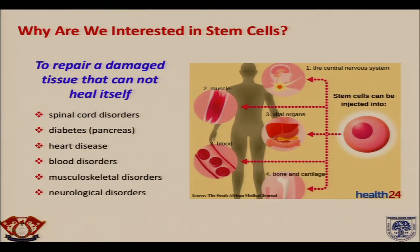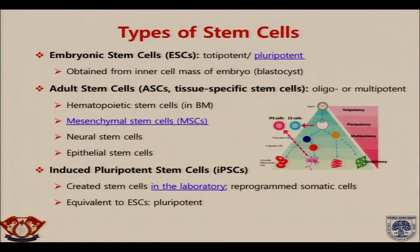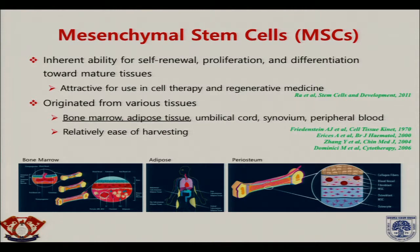We are very interested in stem cell treatment. We may divide stem cells into two types: the embryonic stem cell from the embryo, and the adult stem cell — which is quite interesting for us because we can easily obtain it and many researchers are using mesenchymal stem cells. In the laboratory, we can also induce pluripotent stem cells. Mesenchymal stem cells have an inherent ability for self-renewal, proliferation, and differentiation toward mature tissues, making them attractive for cell therapy and regenerative medicine. They originate from various tissues: bone marrow, adipose tissue, umbilical cord, synovium, and peripheral blood, making harvesting relatively easy.